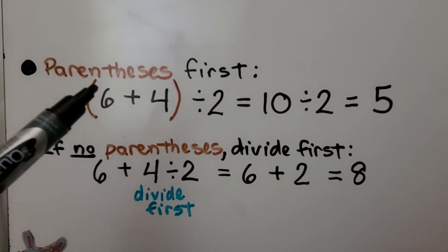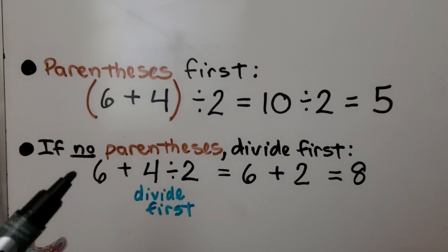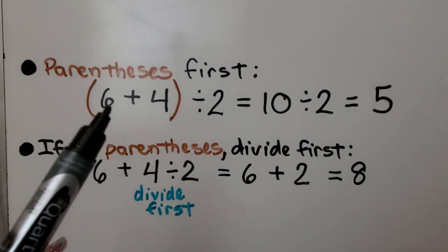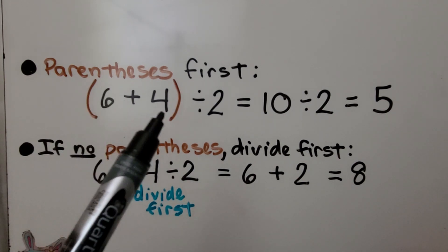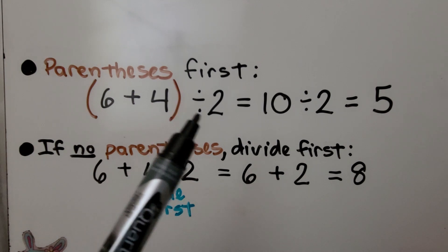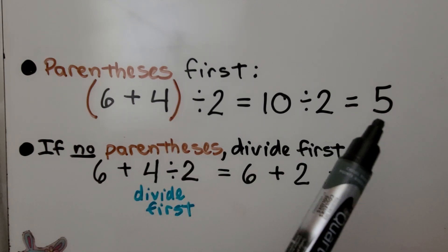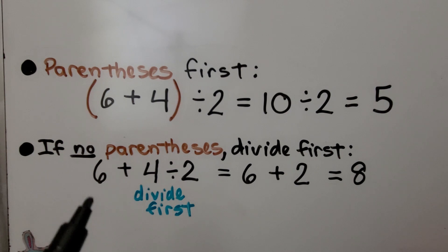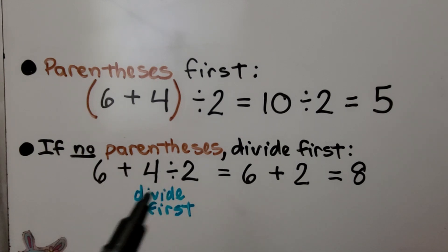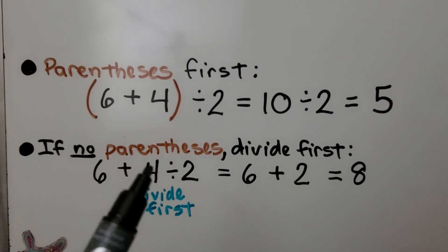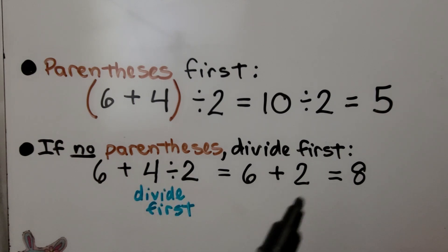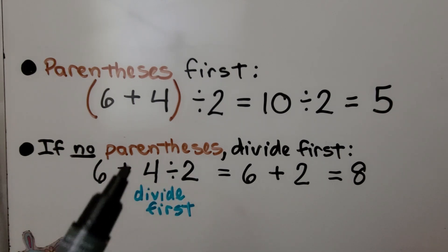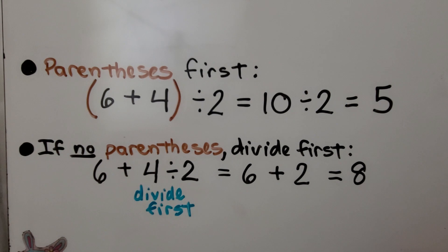Here we have a problem with parentheses and a problem with no parentheses. With parentheses, we do 6 plus 4 which is 10, then divide by 2 — that equals 5. Without parentheses, there are no parentheses, no exponents, no multiplication, so the next thing in PEMDAS is divide: 4 divided by 2 is 2, then 6 plus 2 equals 8.